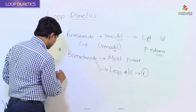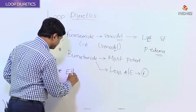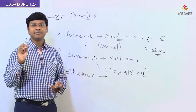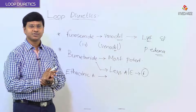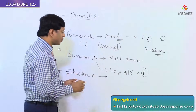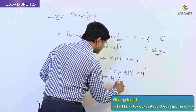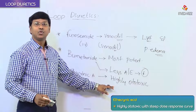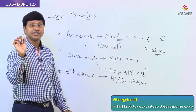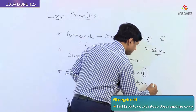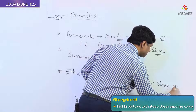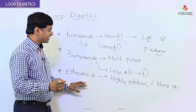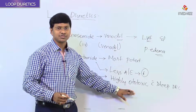Ethacrynic acid is another loop diuretic. Among all loop diuretics, ethacrynic acid is highly ototoxic, with a steep dose-response curve. This is an important MCQ point.